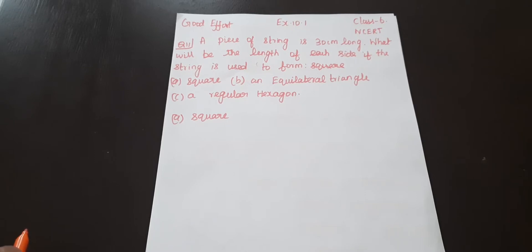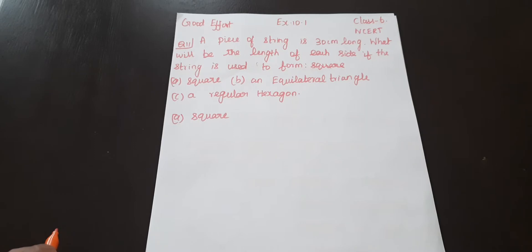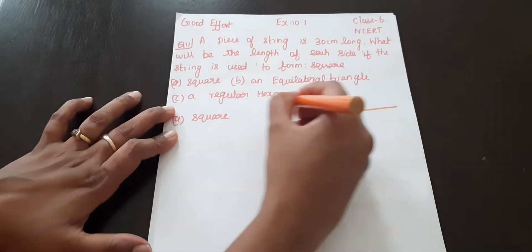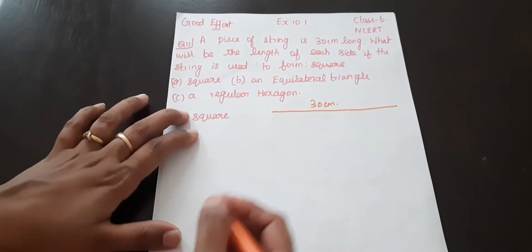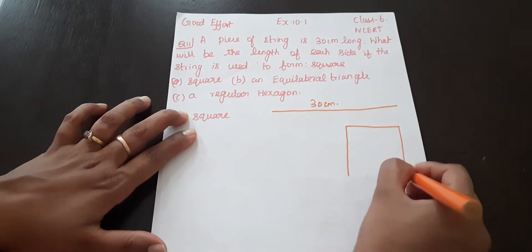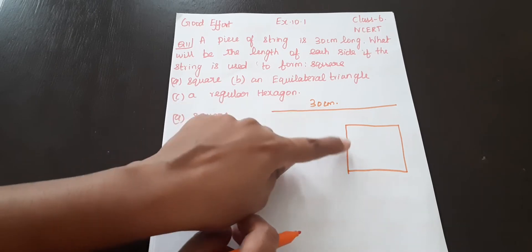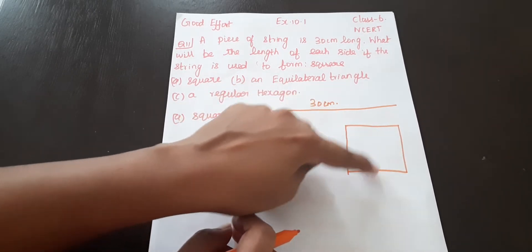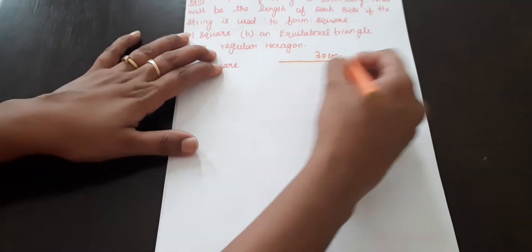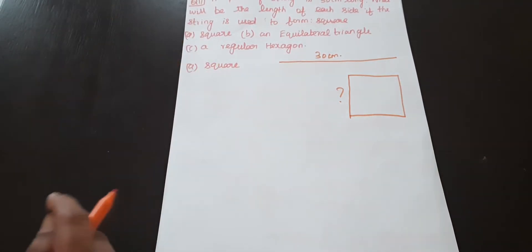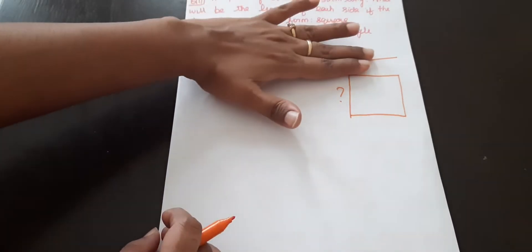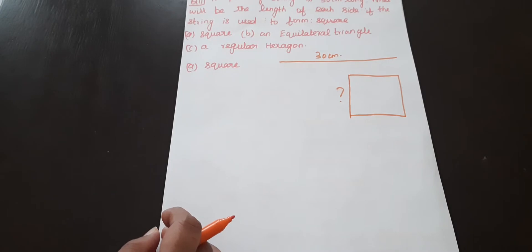So a piece of string — the string is 30 cm long. When we form a square using this string, the total length of the string becomes the perimeter of the square. The string has 30 cm, and the square has 4 sides. So the perimeter of the square is equal to 30 cm.